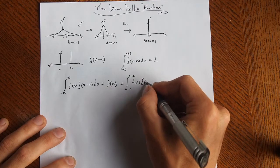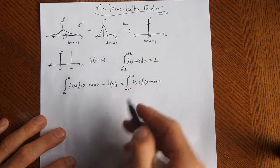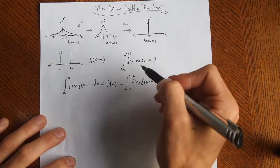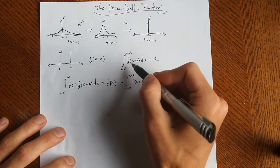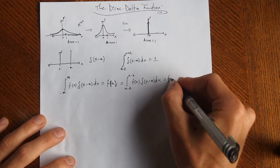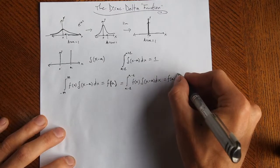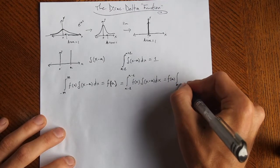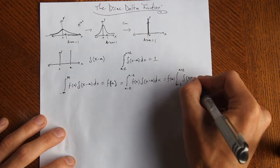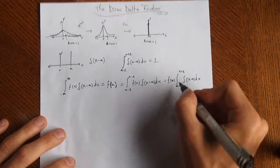And when you take the limit, the only thing that's going to be left over is f at that one point. We know that when we integrate the delta, we get 1, so we can essentially just pull out the f at a, because everything else is just going to be zero when we multiply them together. The integral of delta of x minus a times dx, well, we already know this goes to 1.